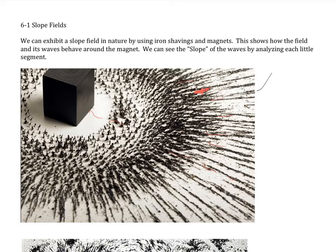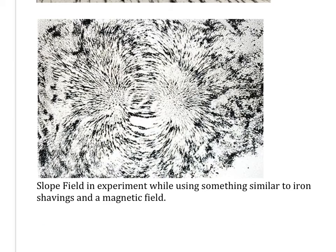Where else do we have slope fields? You might have currents in the ocean, air currents over a country or area, or even airplane dynamics. They put cars and airplanes in wind tunnels just to see how they react — they put smoke out there and you can see how the wind is behaving. There's another cool one: a liquid called liquid iron that reacts to magnets as well.